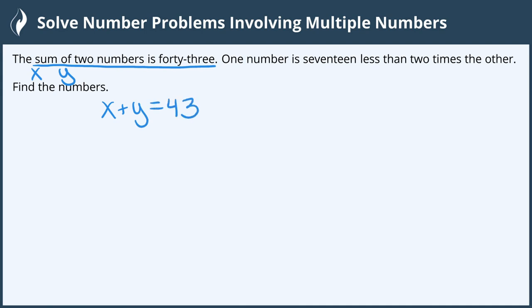The second sentence says one of those numbers, it doesn't specify, so we get to pick. I'm going to choose X. Is translates to equals 17 less than. Less than reverses the order, so this will be subtract 17. Two times the other number, and the other number is Y, so it'll be 2Y.